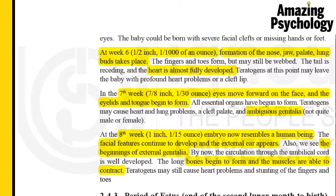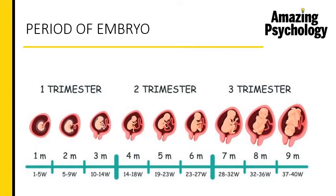Now we move on to the period of the fetus. Pregnancy is commonly divided into the first, second, and third trimester — each trimester being three months, together forming nine months total. The first trimester's first two months cover the period of the zygote and the period of the embryo. It is from the second month onwards that the period of the fetus begins, so within the first trimester you have the completion of the zygote and embryo periods, and the fetal period starts.